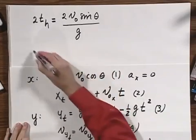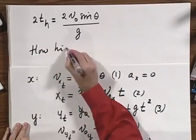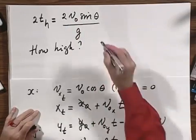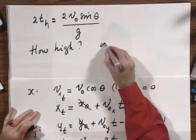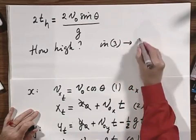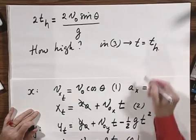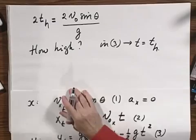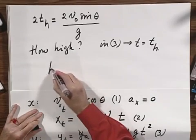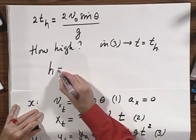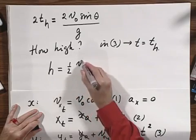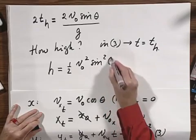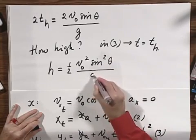Now how high does the object go if we double v zero? Well, I substitute in equation three, I substitute t equals t of h. Because that's the time that it reaches the highest point. And when I do that, and you can do that for yourself, I find that the height that it reaches equals one half v zero squared times the sine squared of theta divided by g.